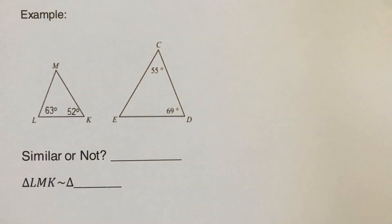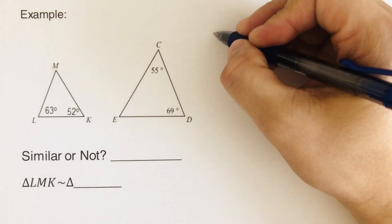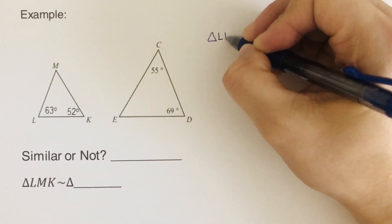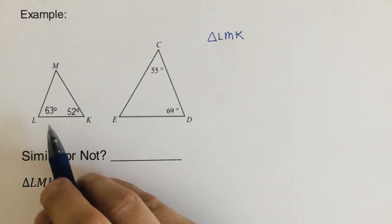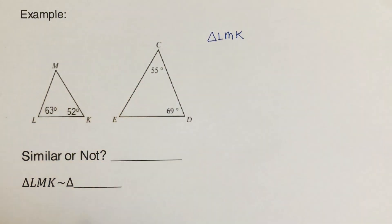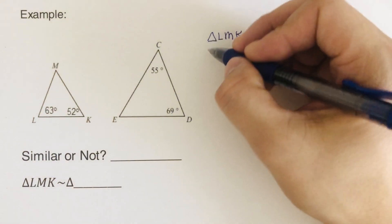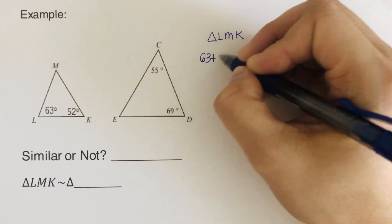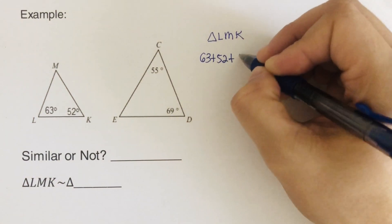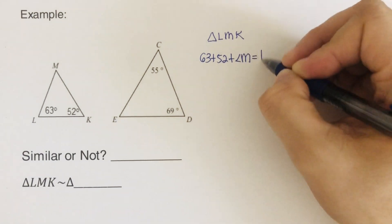Again, we use the angle sum theorem. This is for triangle LMK. So we have 63, 52, 55, and 69. So to set up, to solve for angle M, that would be 63 plus 52 plus angle M is equal to 180. So 63 plus 52 is 115 plus angle M equals 180.